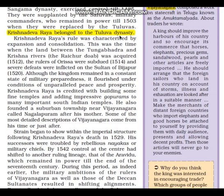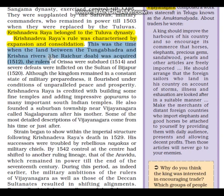Now the main answer. The first sub-point is 'Victory over Neighboring States.' Connecting line: 'Krishnadevaraya's rule was characterized by expansion and consolidation.' Under the first point write: 'This was the time when the land between the Tungabhadra and Krishna rivers was acquired. Rulers of Odisha were subdued and severe defeats were inflicted on the Sultan of Bijapur.'